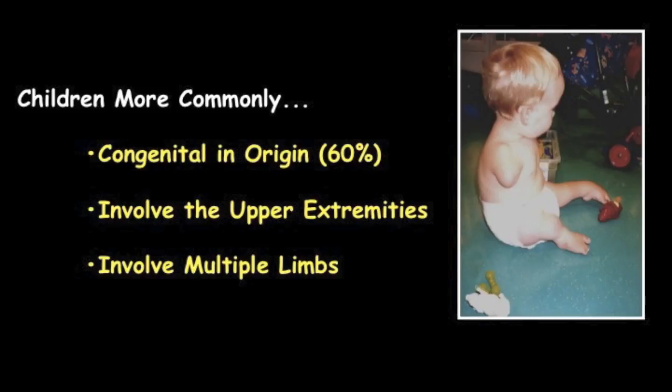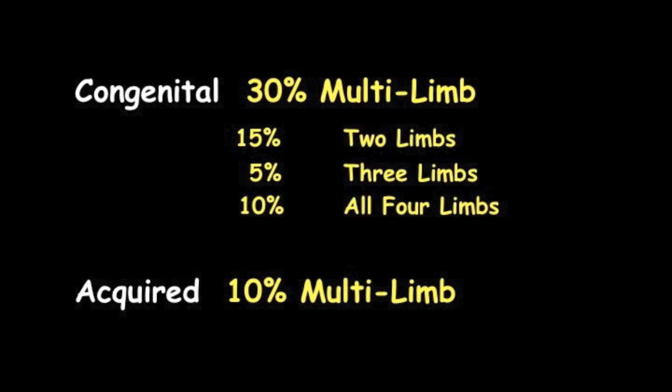This photograph on the right of the little boy shows this in extreme, and is a good one to keep in mind because it encapsulates all the issues of congenital problems — involving both upper extremities more commonly, and also multiple limbs. When you contrast the two, children with congenital lesions are three times more likely to have multiple limb involvement compared to those with acquired deficiencies such as from trauma, infection, or tumor.